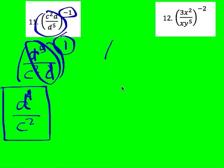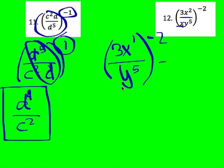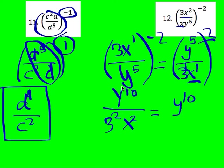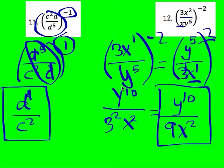For number 12, first reduce inside the fraction: X squared divided by X to the first gives 3X to the first on top and Y to the 5th on the bottom. That's raised to the negative 2. To handle the negative, I flip the fraction over and raise it to the 2nd power. Using power of a power, I multiply exponents: Y to the 5 times 2 gives Y to the 10th on top; 3 to the 1 times 2 gives 3 squared, which is 9; X to the 1 times 2 gives X squared. Final answer: Y to the 10th divided by 9X squared.